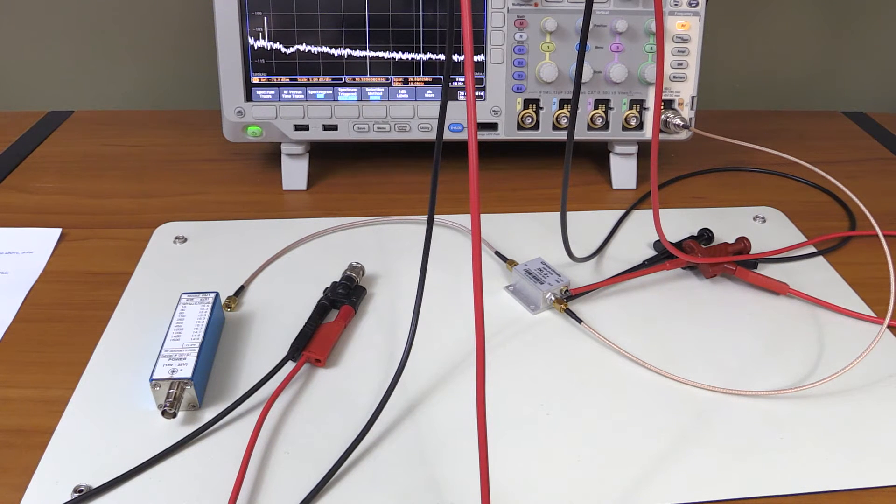Instead of a spectrum analyzer, you could also use an oscilloscope with a fast Fourier transform frequency display. I think this is a very interesting topic because nowadays pretty much any decent digital oscilloscope has an FFT frequency display. So you basically have a limited spectrum analyzer with any oscilloscope that you buy nowadays.